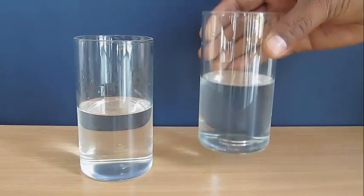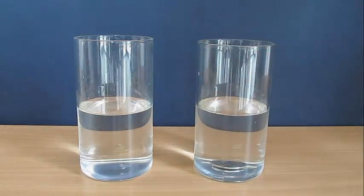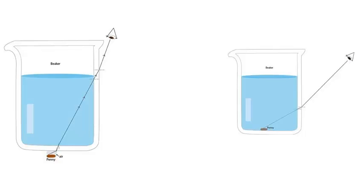Now why is this happening? This is because of the refraction of light. In both cases the path of light is the same except for the case when the coin is under the glass.